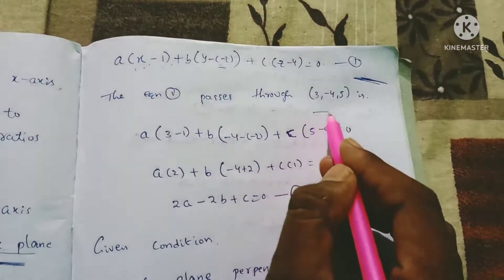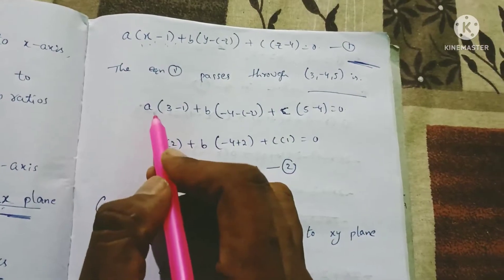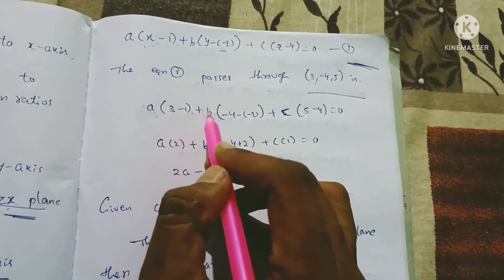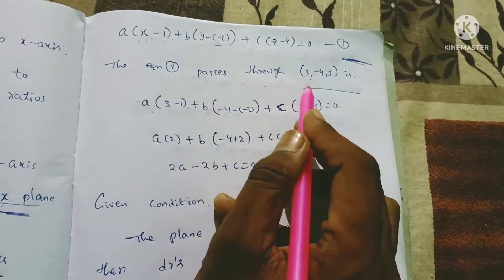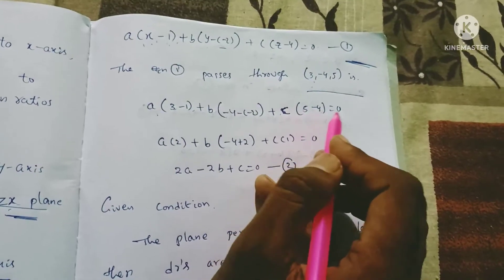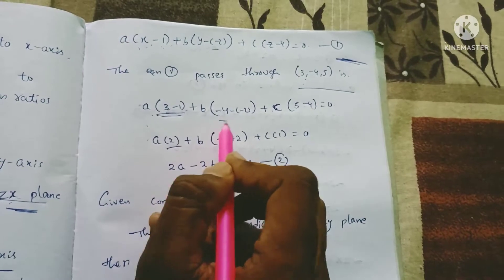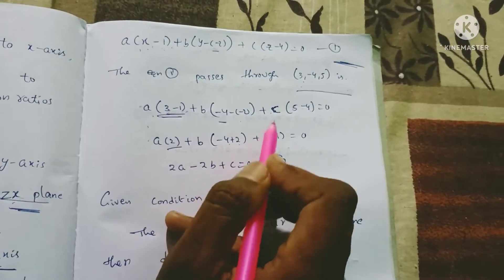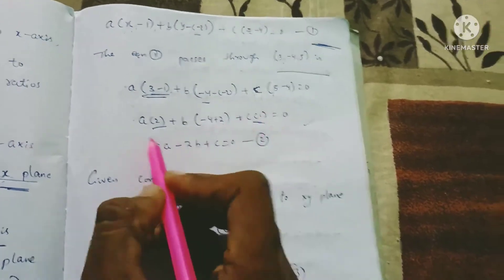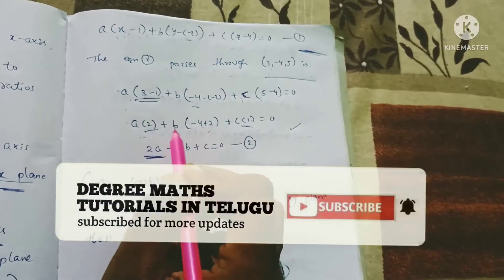The plane also passes through (3, -4, 5). Substituting into the formula: a(3 − 1) + b(−4 − (−2)) + c(5 − 4) = 0. That gives a(2) + b(−2) + c(1) = 0, which simplifies to 2a − 2b + c = 0. This is equation 2.